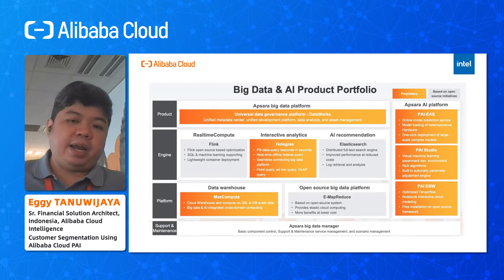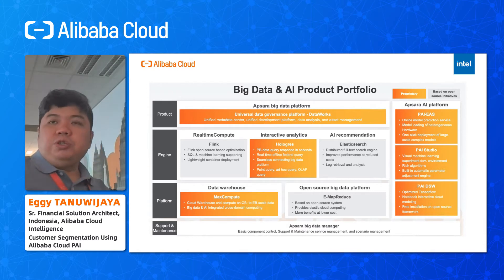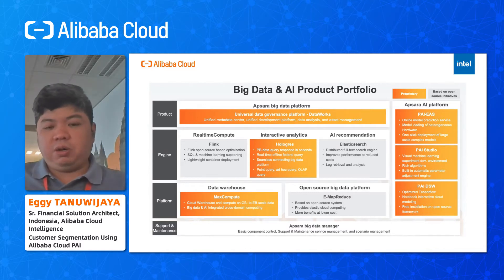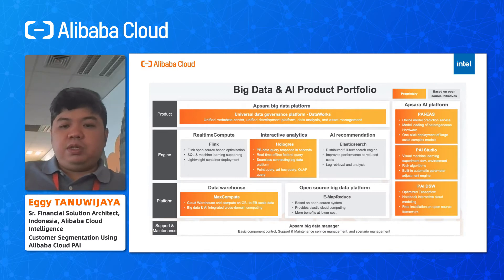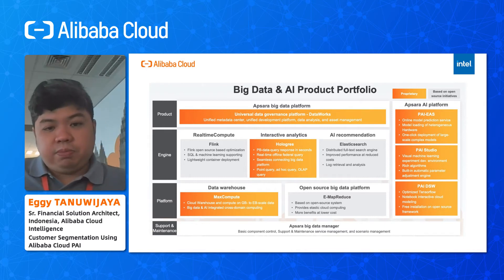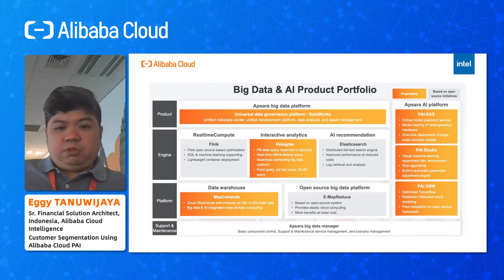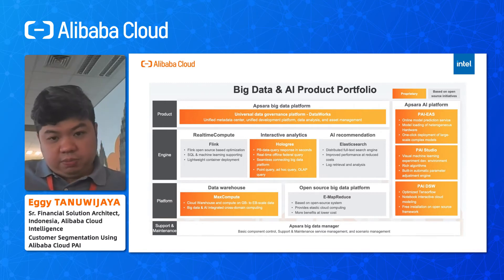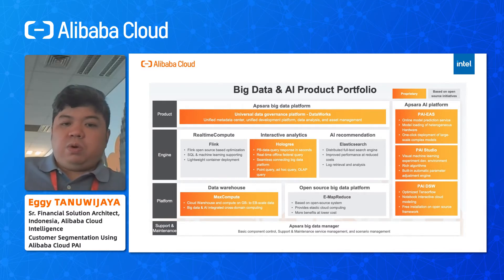For the big data and AI product portfolio on top of Alibaba Cloud, we have two platforms. The first is MaxCompute — users can easily use it because MaxCompute is a platform as a service. Users already familiar with Hadoop, Hive, Hue, or Ranger can also use the image-based product on top of Alibaba Cloud. For analytics engine, we have Hologres, which can query petabyte-scale data in seconds.